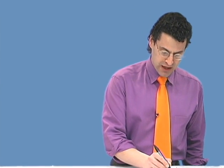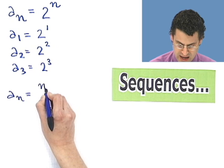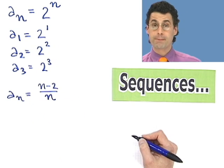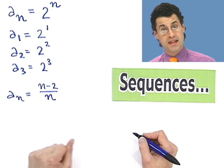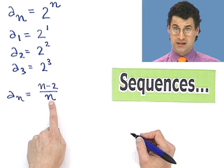So, for example, let's take a look at this sequence. The sequence defined by a sub n equals n minus 2 all divided by n. Now, that's the rule. You could think of that like a function. It would be like f of x equals x minus 2 all over x.